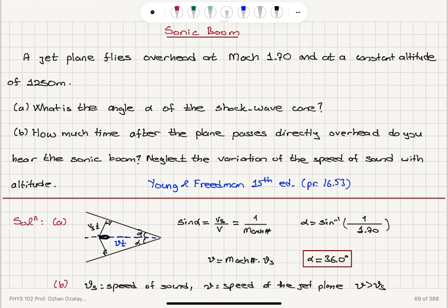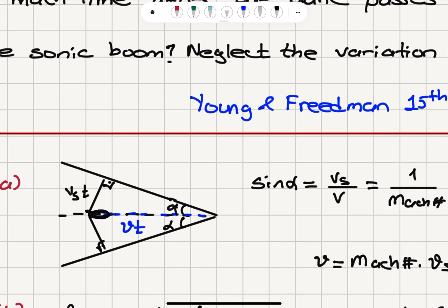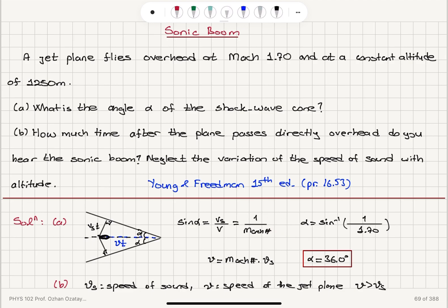This problem is about shock waves. We have a jet plane flying at Mach number 1.7, which is the ratio of the speed of the plane to the speed of sound, so it's greater than the speed of sound. It creates shock waves at a constant altitude of 1250 meters. In a time interval t, Vt is the distance traveled by the plane, and Vs·t is the distance traveled by the sound wave generated at t = 0. This forms the shock wave cone with half angle alpha, where sine alpha equals Vs divided by V, which is 1 over the Mach number, giving alpha equals 36 degrees.